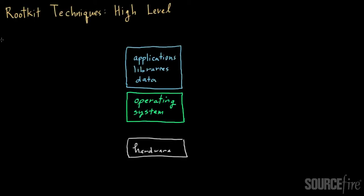In this video I'd like to continue talking about rootkits and in particular I want to focus on how rootkits actually work, discussing some of the techniques they use at a high level. A rootkit is basically a set of software components geared towards maintaining a persistent and undetectable presence on a computer. The original rootkits were modified versions of Unix utilities designed for an attacker to elevate their own privileges or gain root access and maintain that access on a system.